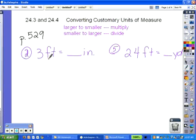So if we look at number 2, and we're converting feet to inches. Feet are larger units than inches, so that means we're converting from a larger unit to a smaller unit, which would tell us to multiply. So we multiply 3 times the number of inches in a foot, which is 12. 3 times 12 is 36, so there are 36 inches in 3 feet.